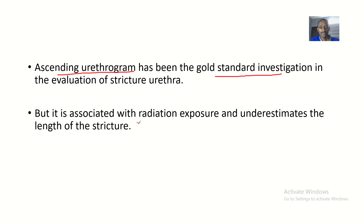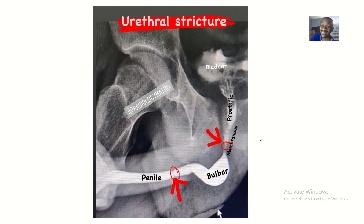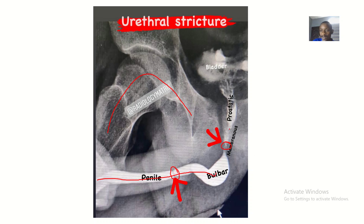However, it is associated with radiation exposure and underestimates the length of the stricture, so it won't show you a detailed image. As I mentioned, in an X-ray, bones show up as white and soft tissue shows up as black. Here the ureter and bladder are showing up as white, which means we used a contrast medium to make them appear white.